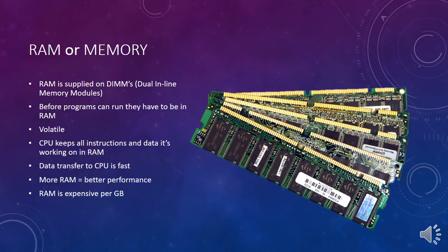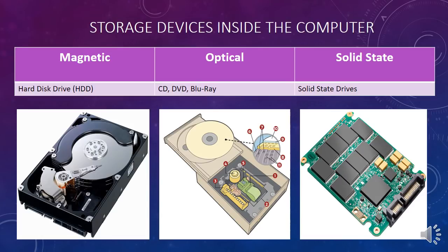RAM is volatile, which means that when the power switches off you lose everything that was in RAM. The CPU keeps all its instructions and the data it's working on in RAM, so data transfer to the CPU has to be very fast so the next instruction can be found and accessed quickly. If you have more RAM you get better performance and your computer works faster, but RAM is very expensive per gigabyte.